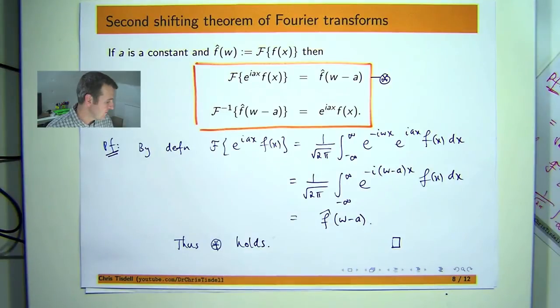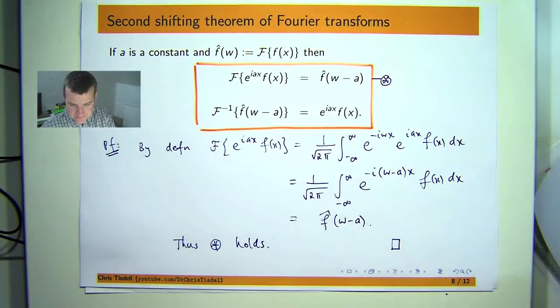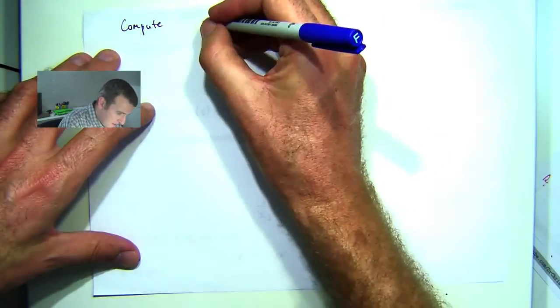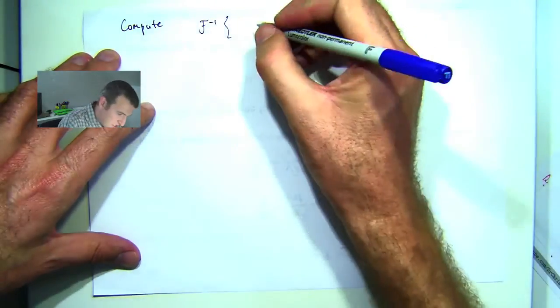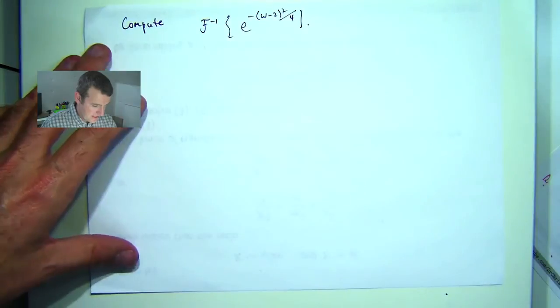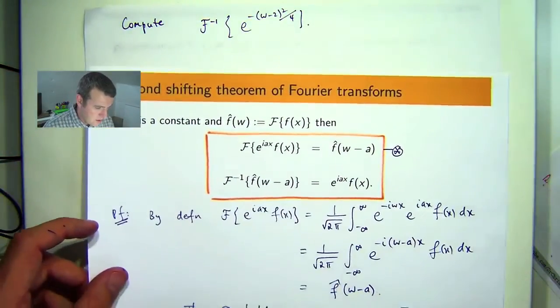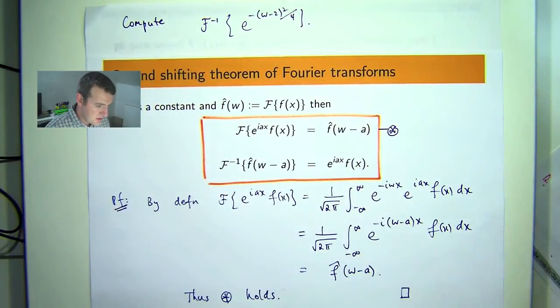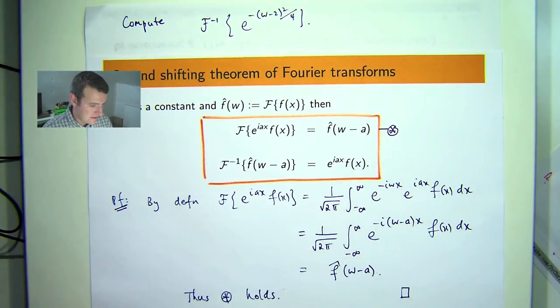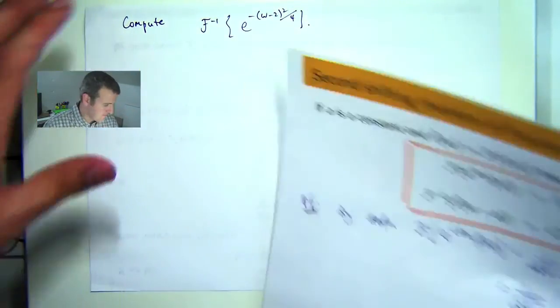Alright, so I'm just going to hand write this one out for us to compute the inverse Fourier transform of this shifted Gaussian. So we essentially want to apply this second part now. So what we'd like to do is identify a and identify f hat. Once we have a and f hat, we can take the inverse transform of f hat to get f of x and multiply through by this exponential involving a. So let's work through the example.